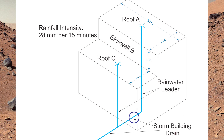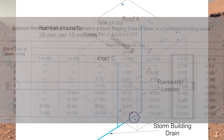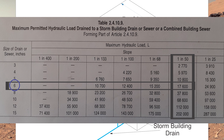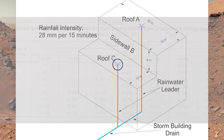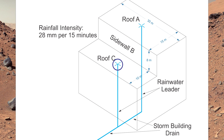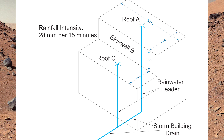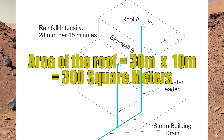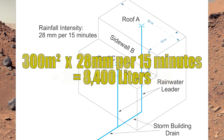Now we have another rainwater leader coming down. Let's size the rainwater leader on Roof C. Roof C is 10 meters by 30 meters with one roof drain. 10 times 30 is 300 square meters, times the rainfall intensity of 28, equals 8,400 liters.